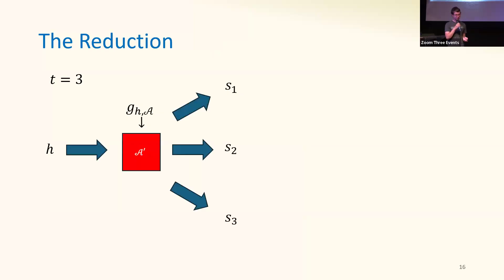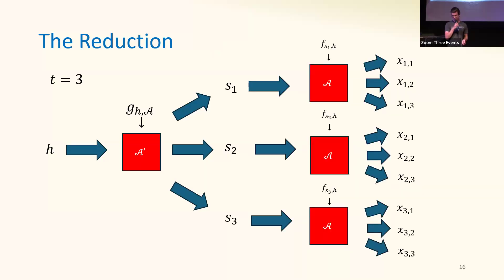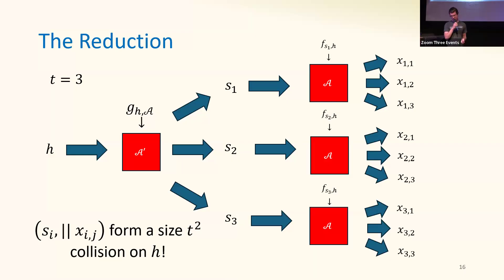Our reduction works as follows: given H from the original function family, first formulate function G-sub-H and feed it to adversary A-prime. This gives T prefixes SI. Then for each of these prefixes, formulate function F corresponding to the prefix and run adversary A against it. This gives T values X-ij for each SI. The collection of all SI concatenated with X-ij — that is, S1 concatenated with X11 through X1T, S2 concatenated with X21 through X2T — forms a size-T-squared collision on the original function family.